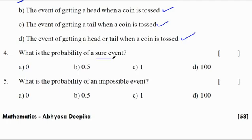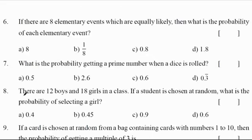What is the probability of a sure event? Sure event probability equals 1. What is the probability of an impossible event? Impossible event probability is 0. If there are 8 elementary events which are equally likely, then the probability of each elementary event is 1/8.